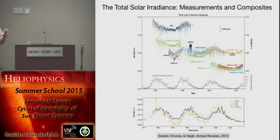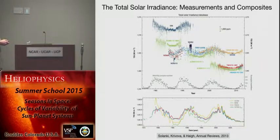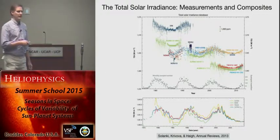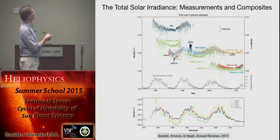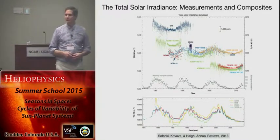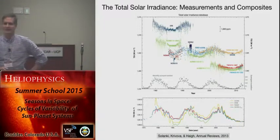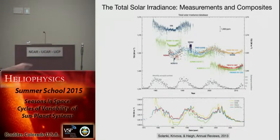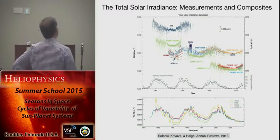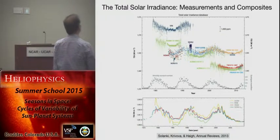In the space age, instruments called radiometric cavities were placed on satellites to measure the total solar irradiance as a function of time, and there have been a number of them. Looking at this plot of data — a radiance time series from different instruments over the last 30 years — two funny things stand out. Can anyone think of what to take away? They don't agree. They're all offset from each other.